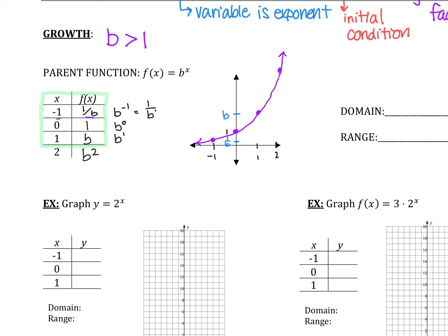That brings us to something in math called asymptotes. We haven't talked about asymptotes much — we did a little bit with rational functions and vertical asymptotes back in Algebra 1. Asymptote is spelled A-S-Y-M-P-T-O-T-E.